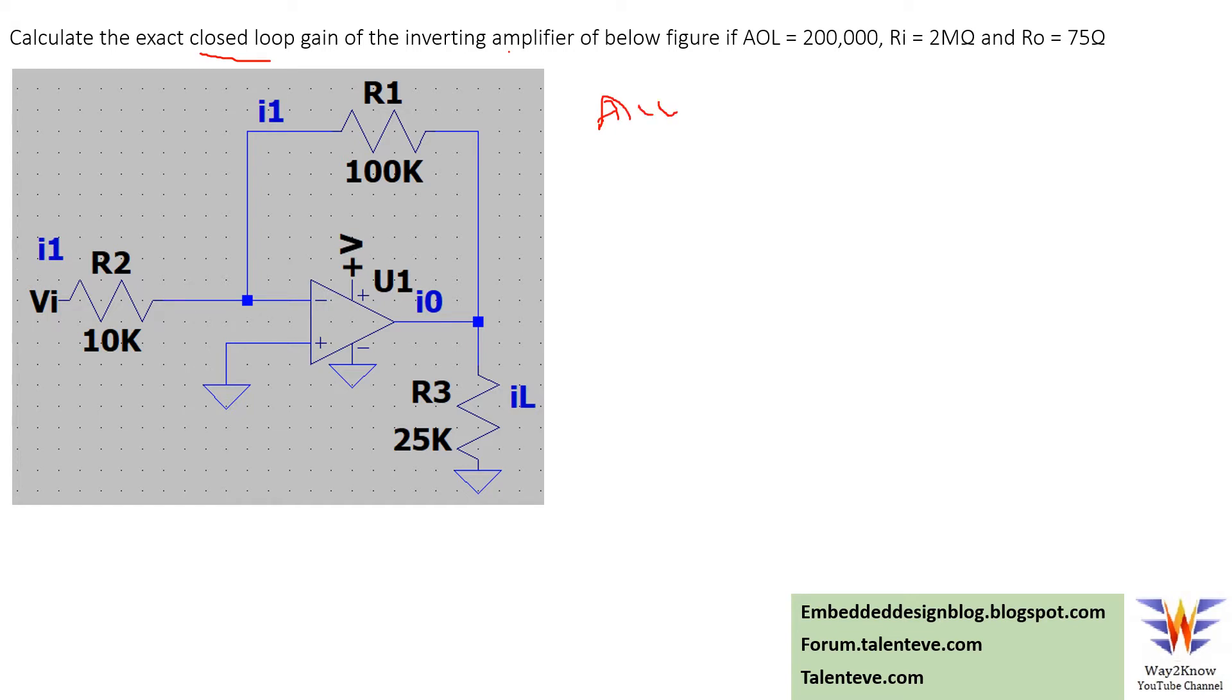What is given: the open loop gain is provided, along with input impedance and output impedance of the operational amplifier. This is a tricky question actually - it has a very simple answer, but the question is asked in a tricky way.